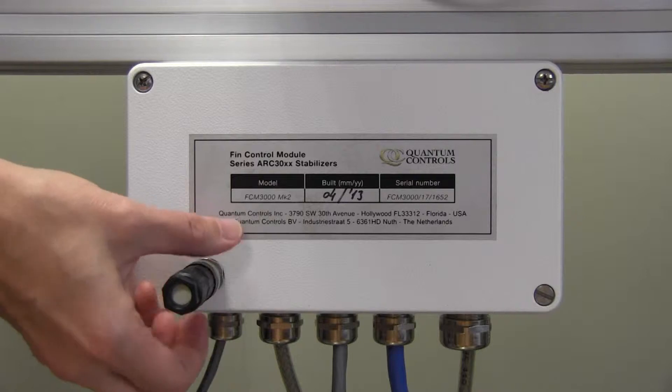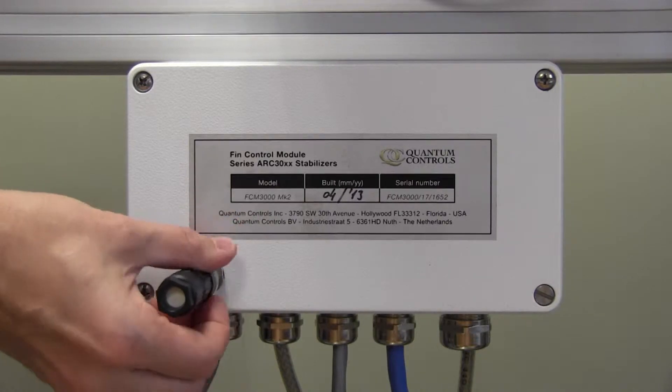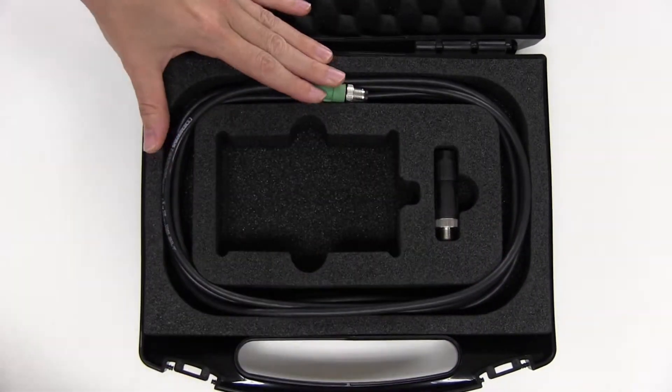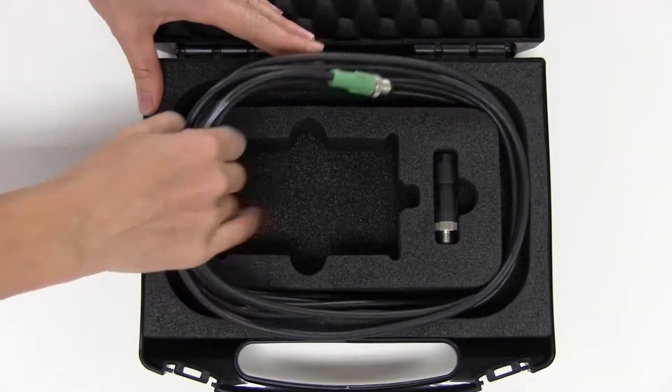Remove the dummy connector cap from the FIN or effector control module and store it in the specially contoured slot in the case. Remove the cable and handheld device from the case.